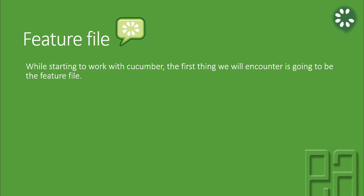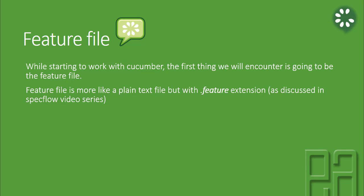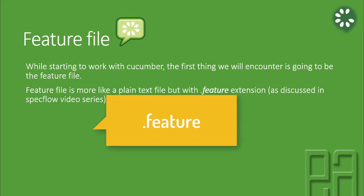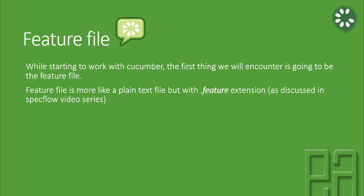As we already created a feature file in our previous video, we created it in our IntelliJ IDE by giving an extension of .feature. The feature file is more like a plain text file but with a .feature extension, as we have already discussed in our SpecFlow video series. This .feature extension is going to represent a feature file, and within it we will be writing all our steps — which is the Gherkin specification we discussed in part one.